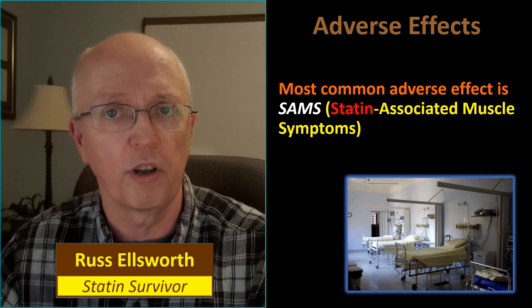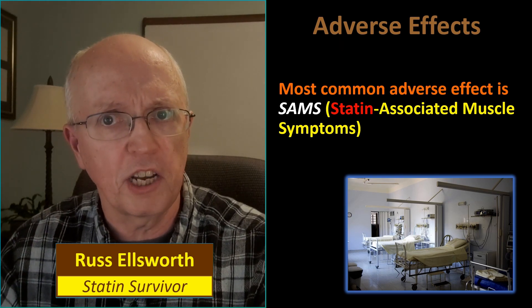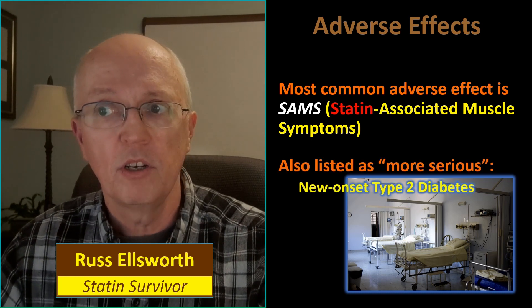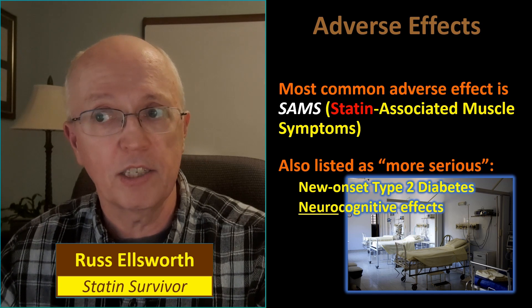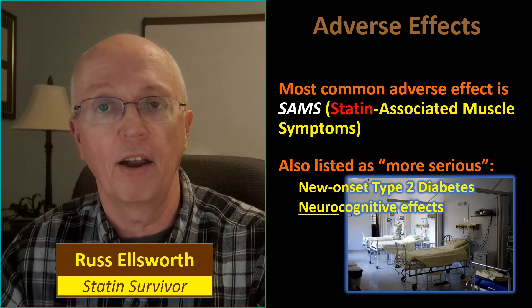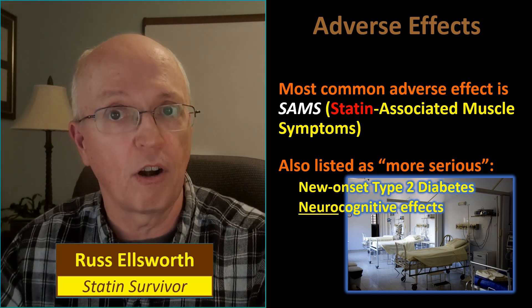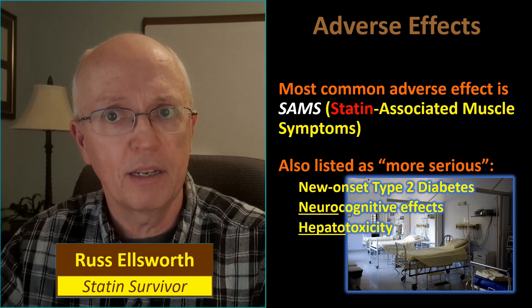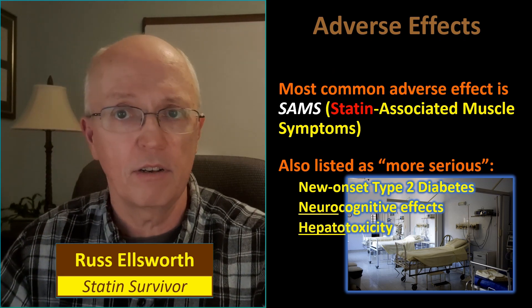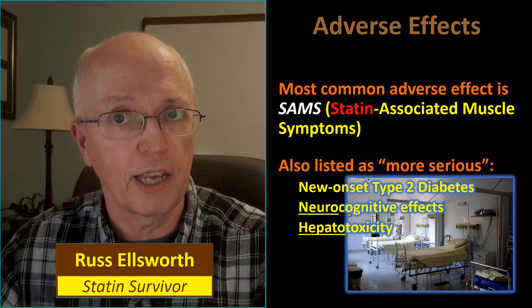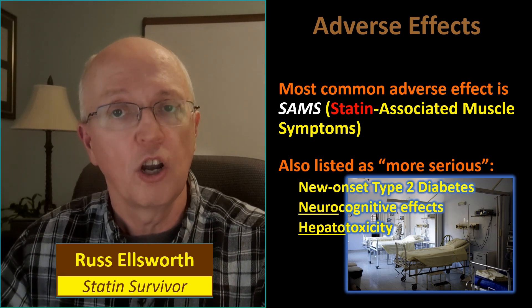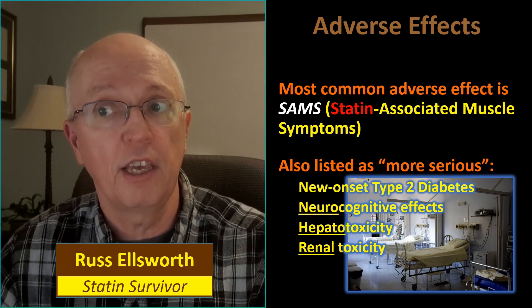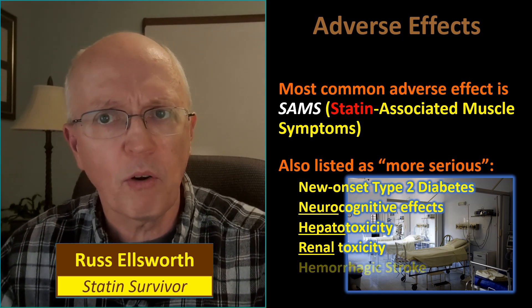Also listed among the more serious adverse effects: new onset type 2 diabetes; neurocognitive effects — whenever you see 'neuro,' that means it has to do with either the brain or nervous system; hepatotoxicity — 'hepa' tells you it has to do with the liver, think of hepatitis; renotoxicity — 'reno' refers to the kidneys; and hemorrhagic stroke.